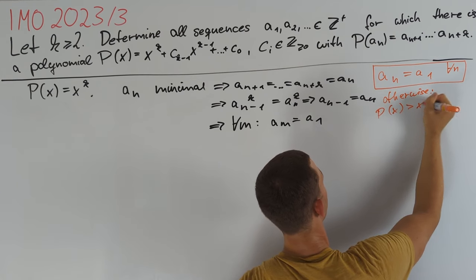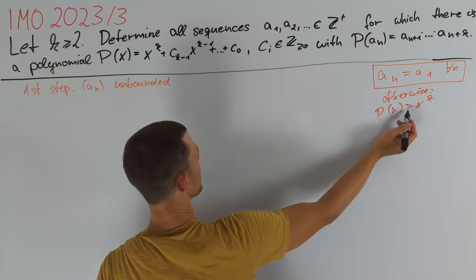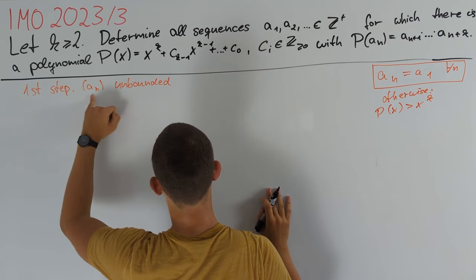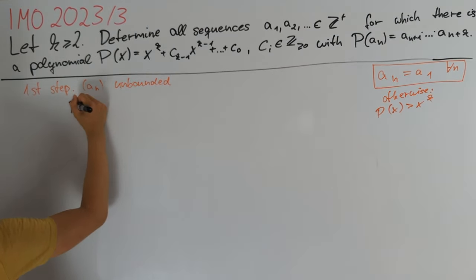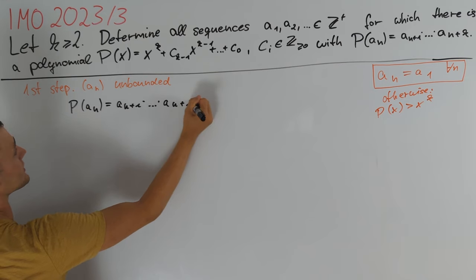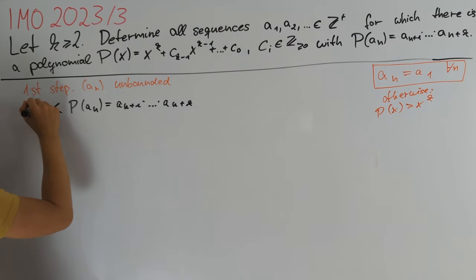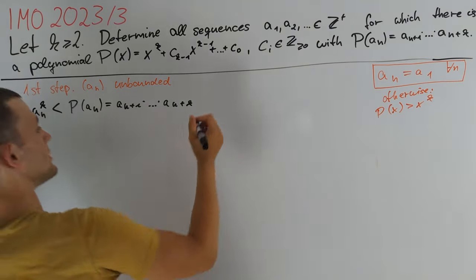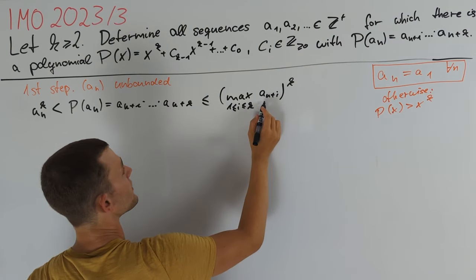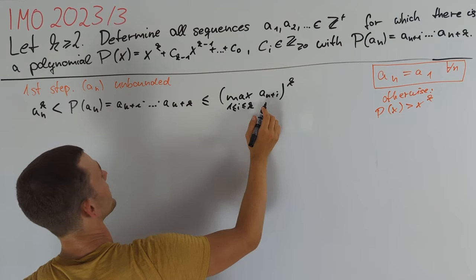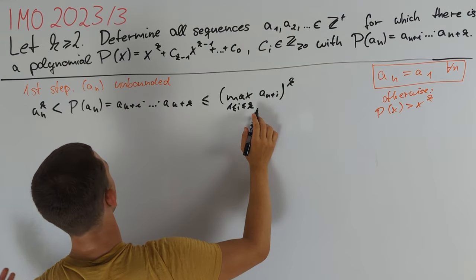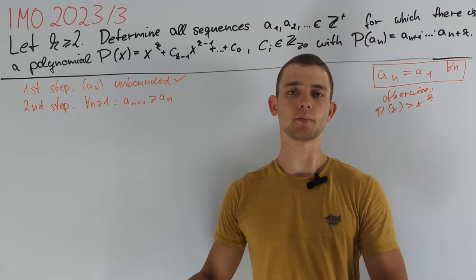Therefore, p(x) equals x^k only works for constant sequences, and in all other cases p(x) must be strictly greater than x^k. We now deal with the case p(x) > x^k and begin by proving that a_n must be an unbounded sequence. From p(a_n) equals a_{n+1} times ... times a_{n+k}, we can bound this from below strictly by a_n^k, which is less than or equal to the maximum of those terms to the power of k. So one term is always larger than a_n, giving a strictly increasing subsequence, and since we deal with integers, a_n is unbounded.